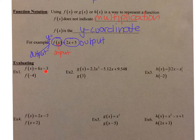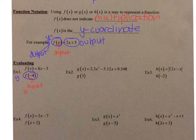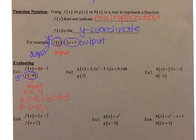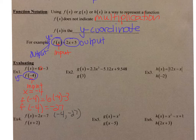For f(x) = 6x − 3, we're looking for f(−4). Negative 4 is my input, so x = −4. Wherever I see an x I plug in −4: 6 times −4 minus 3 equals −24 − 3 = −27. So f(−4) = −27, and this can be written as the point (−4, −27).